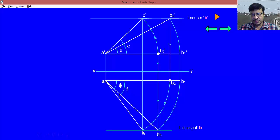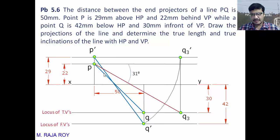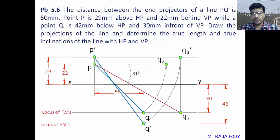Now starting from the top view PQ: take P as center and PQ as radius, draw an arc in the reverse direction up to the locus of P to get Q2. From Q2, draw a projector onto the locus of front views to get Q2 dash. The line joining P dash and Q2 dash gives the true length. Both P dash Q2 dash and PQ3 must be equal since both represent the true length. The inclination of P dash Q2 dash with respect to XY is the inclination with HP, denoted theta.